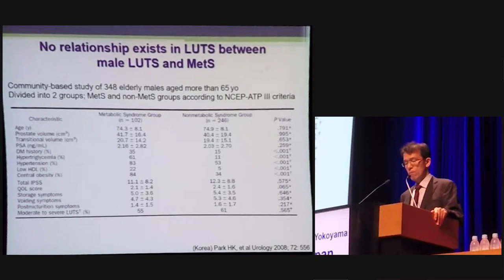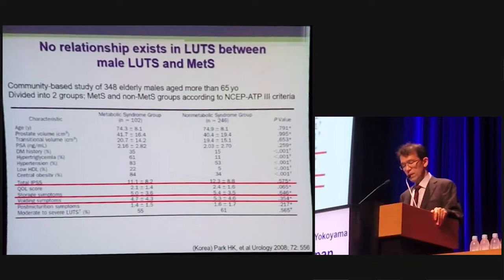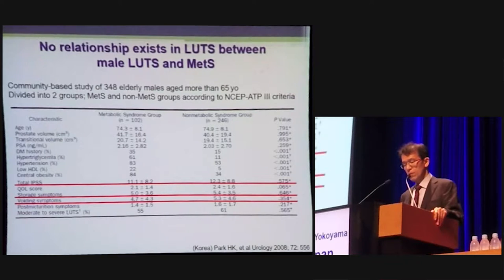In Korea, 348 elderly males aged more than 65 years were divided into two groups: metabolic syndrome group and non-metabolic syndrome group. There was no significant difference in total IPSS, storage symptoms, or voiding symptoms between the metabolic syndrome group and the non-metabolic syndrome group. But why this negative association?